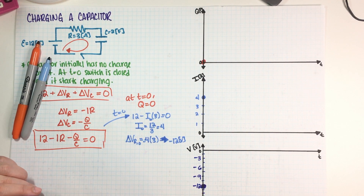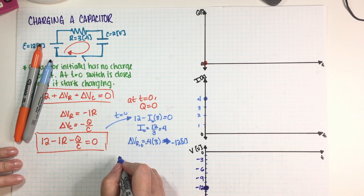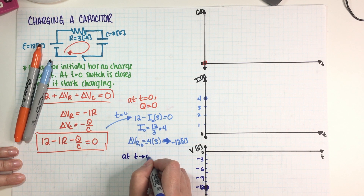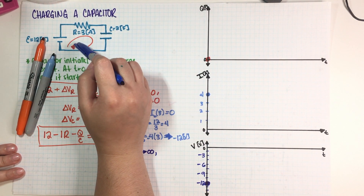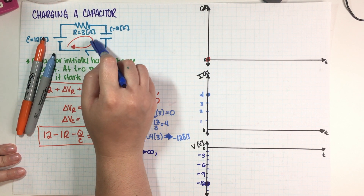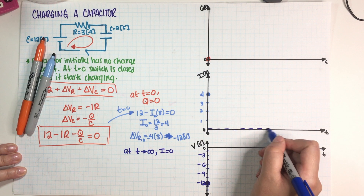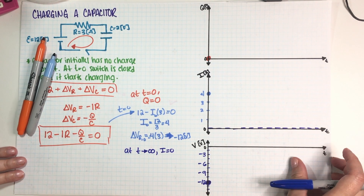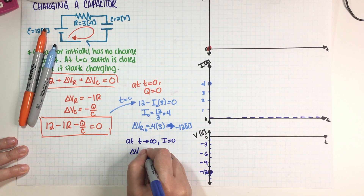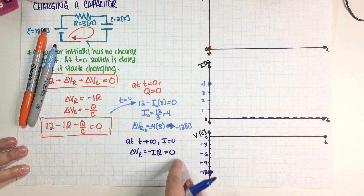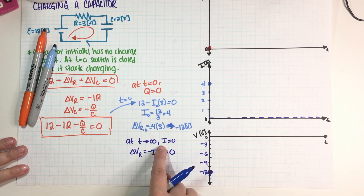Now we need the final values. After the capacitor is fully charged, it opens up, so we don't have any current anymore — the charge can't fully loop around. So the final current is zero. The final value for delta V across the resistor also has to be zero, because if the final current is zero, then voltage is zero times 3, which equals zero.